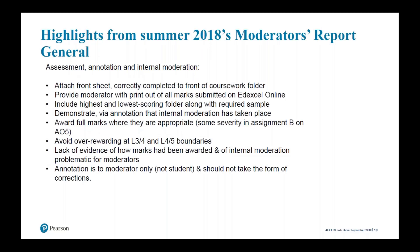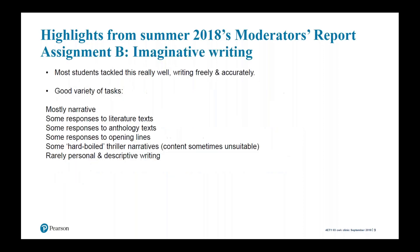Let's look at what the moderators had to say having seen the first set of work. On the imaginative writing, the moderators said that most students had tackled the task really well and were writing freely and accurately. In quite a few cases, students' achievement on Assignment B was notably better than on Assignment A. They were thinking this was perhaps to do with the amount of choice students had been given on Assignment A — if they had been stuck with a task they didn't really like, they had done less well.